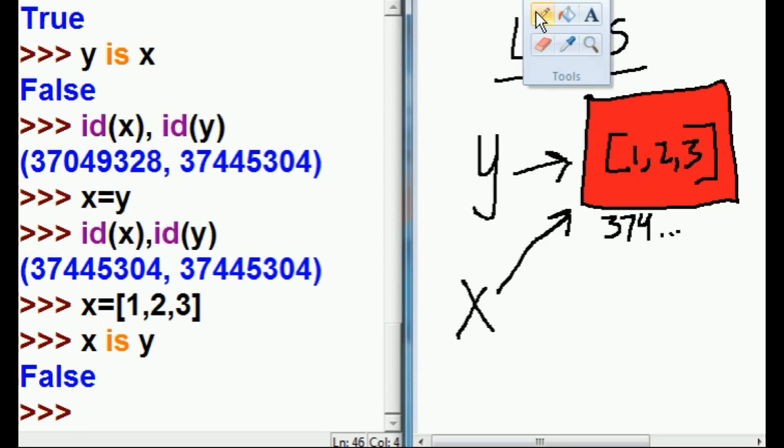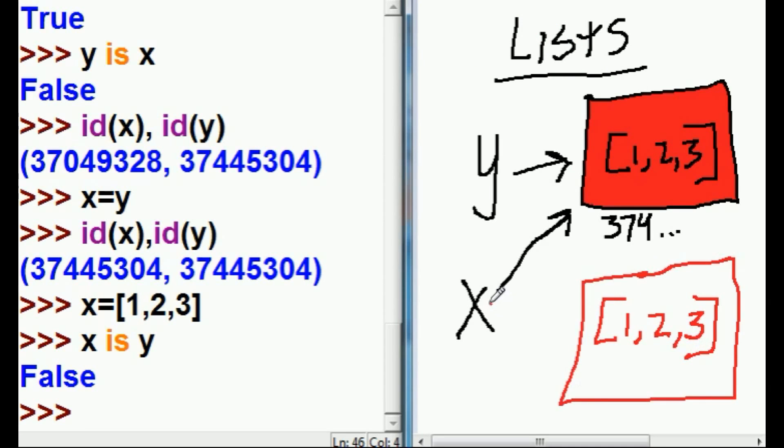I have now done what? I have now created in memory another [1,2,3] list and told x to reference this guy. He's no longer referencing y's [1,2,3].